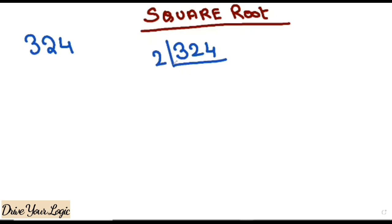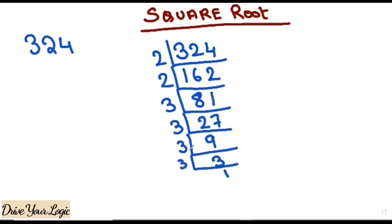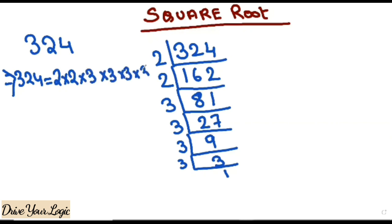2 is a prime number, so we start with 2: 2 into 162. Then 2 into 81. 2 will not go further, so we try 3. 3 into 27, 3 into 9, 3 into 3, 3 into 1. Now write down 324 equals 2 × 2 × 3 × 3 × 3 × 3.